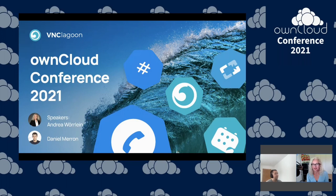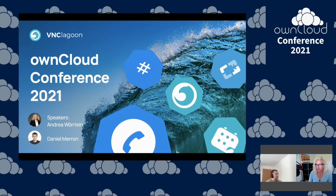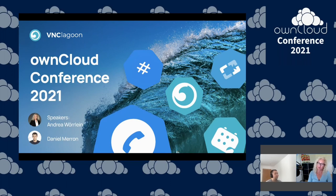Hello everyone, this is Andrea from VNC. Joining with me is Ben. We are very happy to be here at the ownCloud Conference 2021. VNC Lagoon is a suite of integrated communication and collaboration products which is available on-prem and also in private or public clouds. We have spent the recent two years migrating all our applications and products to Kubernetes.